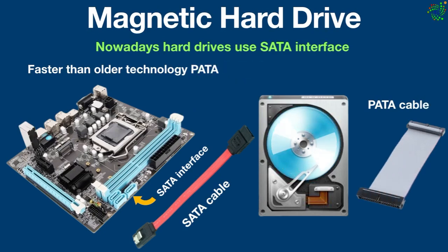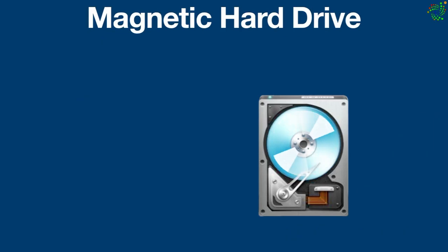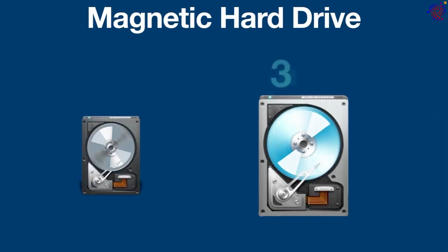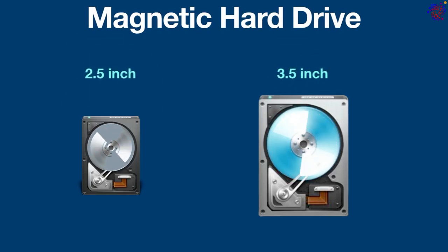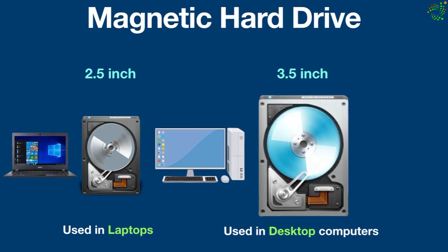Nowadays, hard drives use the SATA interface. This newer standard is faster than the older PATA technology — instead of data traveling in parallel paths, it travels in a serial path. SATA delivers 6 gigabits per second transfer speed. Hard drives come in two different sizes: 3.5 inch, used in desktop computers, and 2.5 inch, used in laptops.